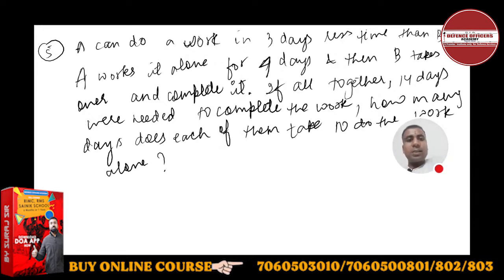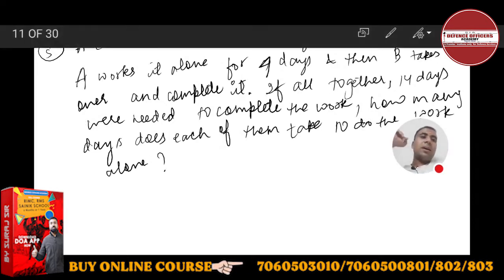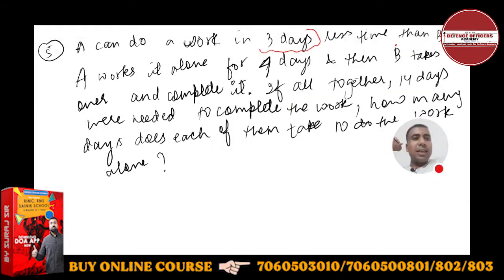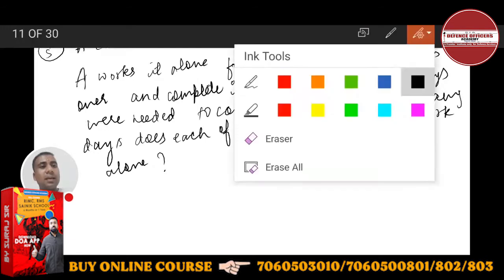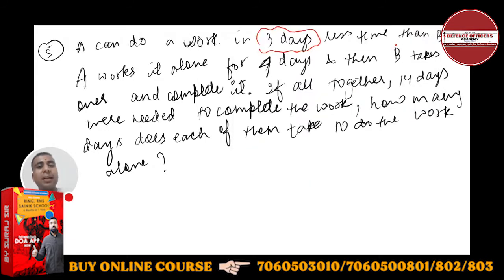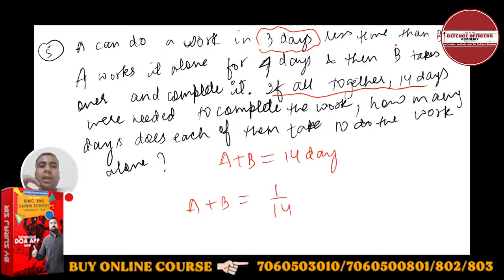Very simple. I hope you can understand my handwriting. Let's start from here. If all together 14 days, you should know in time and work all calculations are done on one day work. If A and B together take 14 days to do the work, then A and B's one day work will be 1 by 14.